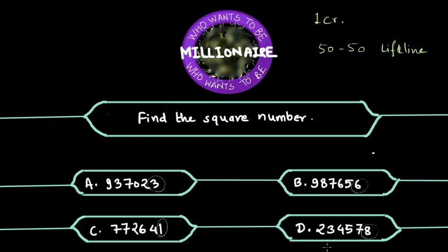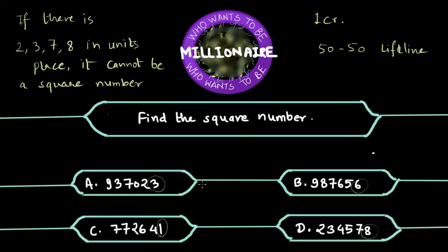There is an interesting property of the square numbers. Only specific numbers appear at the units place of a square number. And this property says that if there is 2, 3, 7, or 8 in units place, it cannot be a square number. So now you definitely know that option A is not the answer and option D is not the answer.